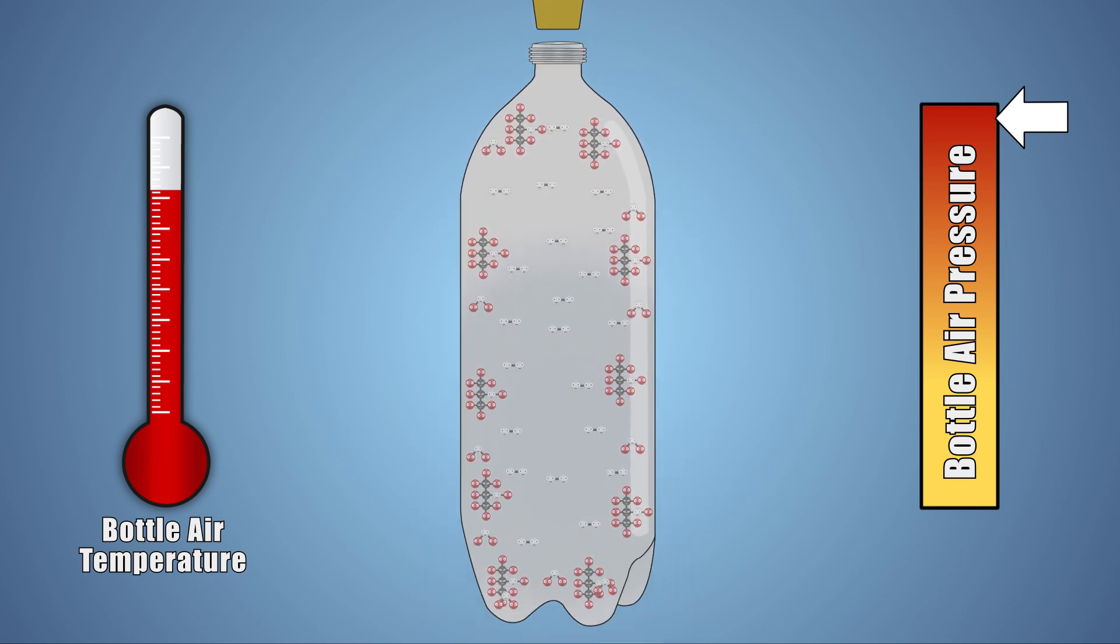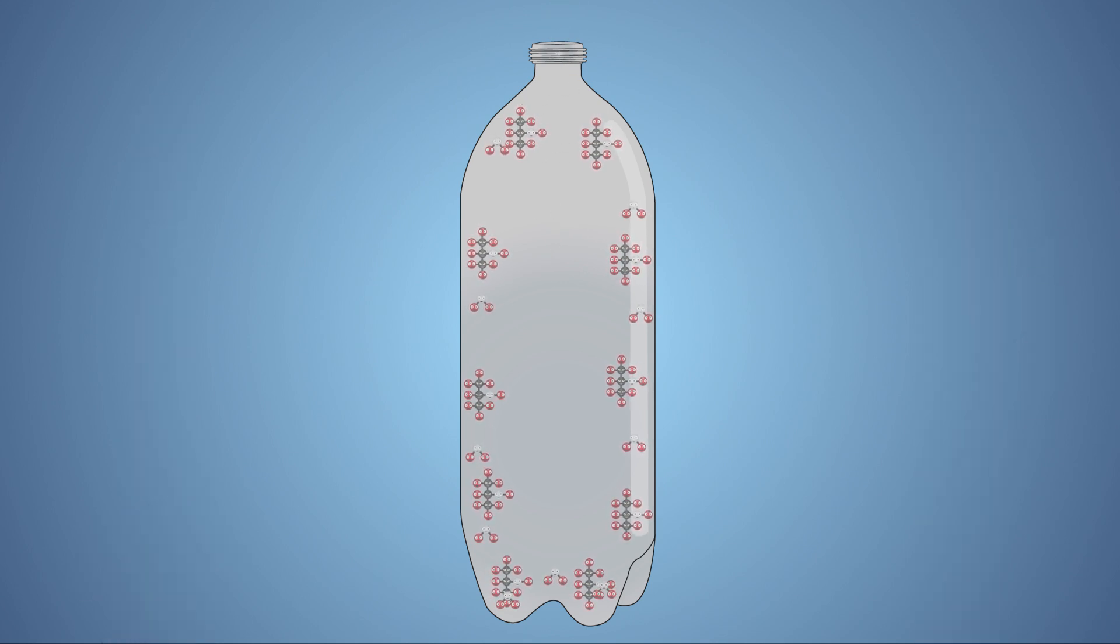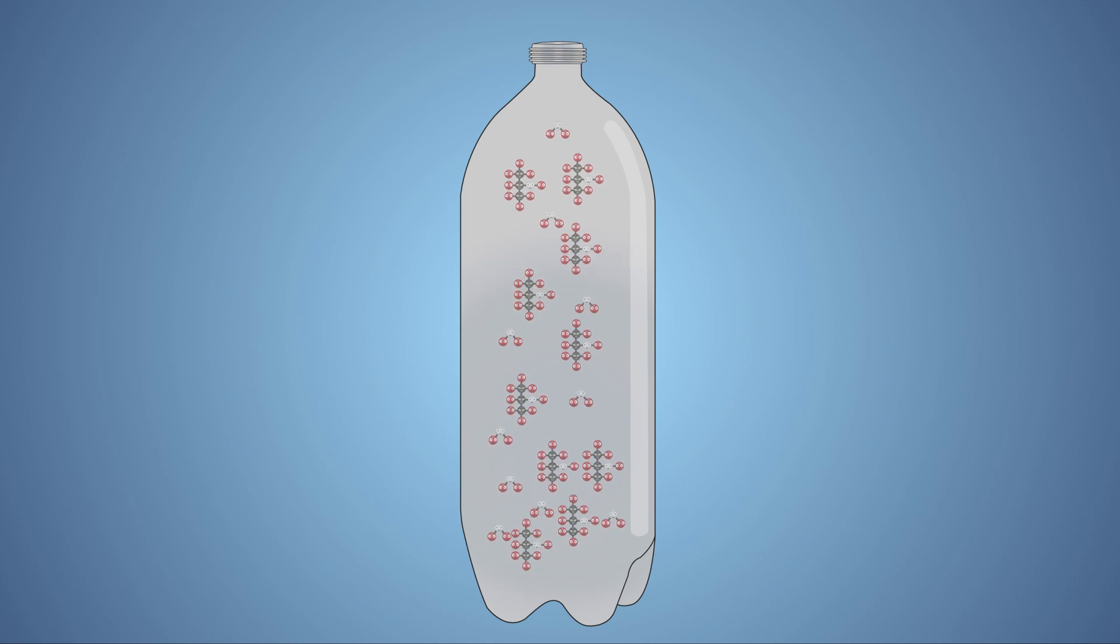When we suddenly release the cork, the air molecules rush out of the bottle, suddenly lowering the pressure and temperature inside the bottle. This quick drop in temperature causes the alcohol and water to quickly condense.